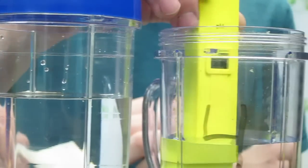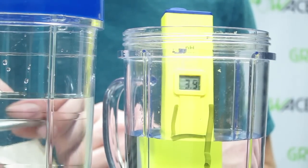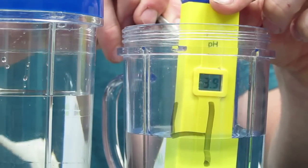Now dip the electrode into the 4.0 pH solution. Wait for the reading to stabilize. If the meter does not read 4.0, repeat the calibration process.